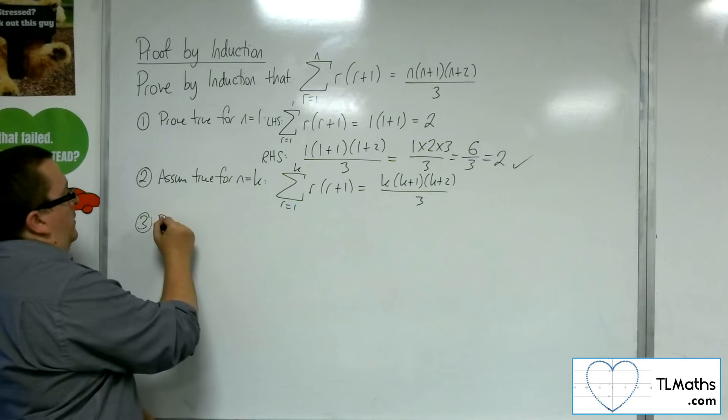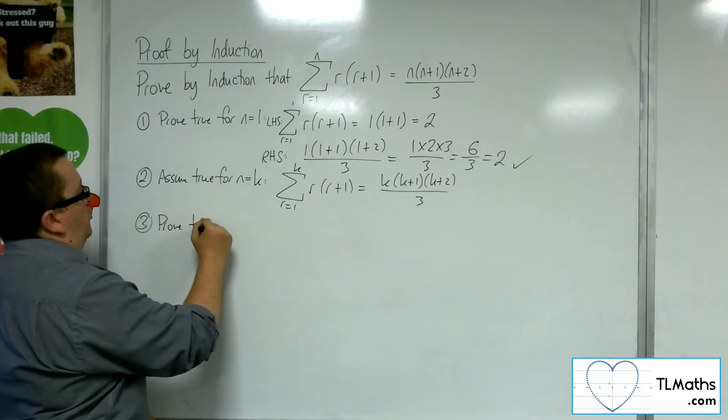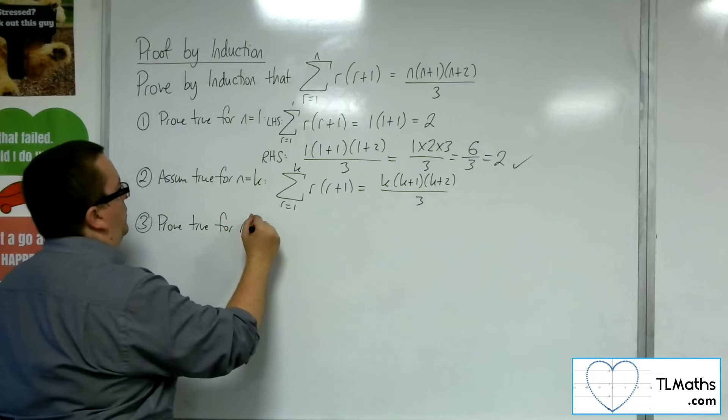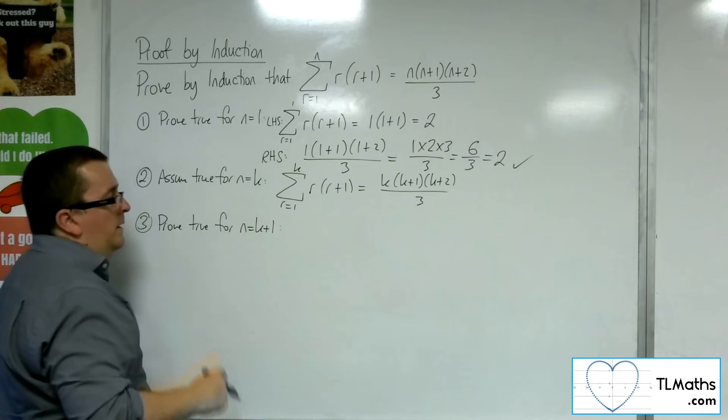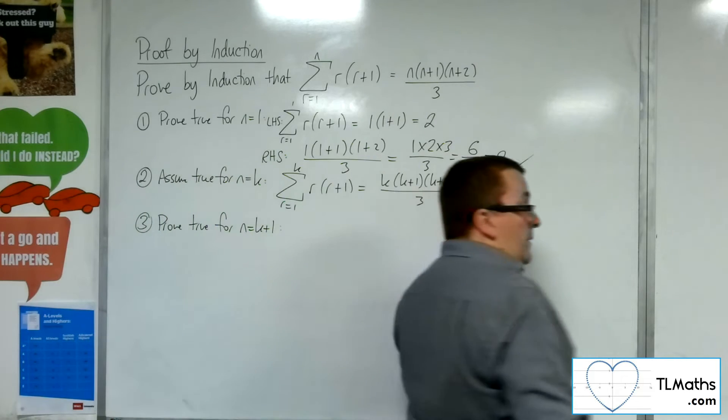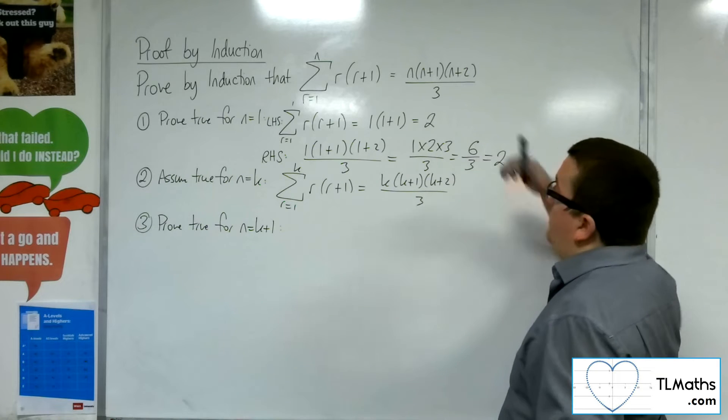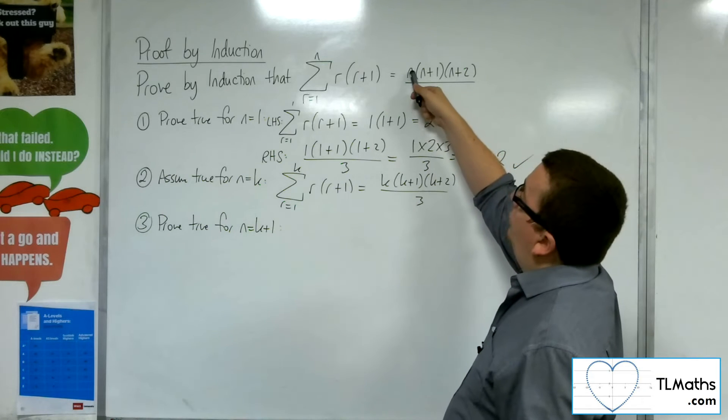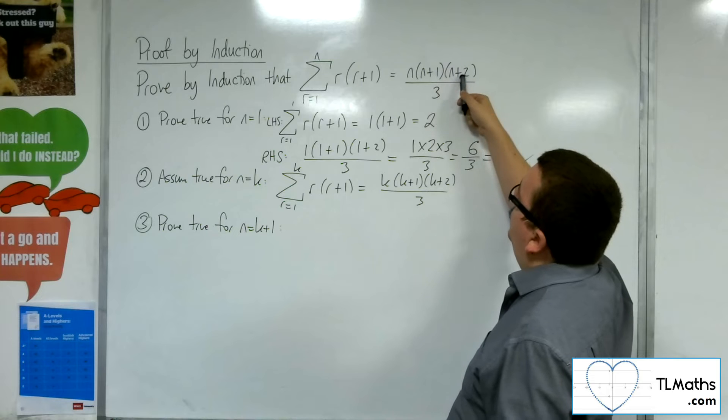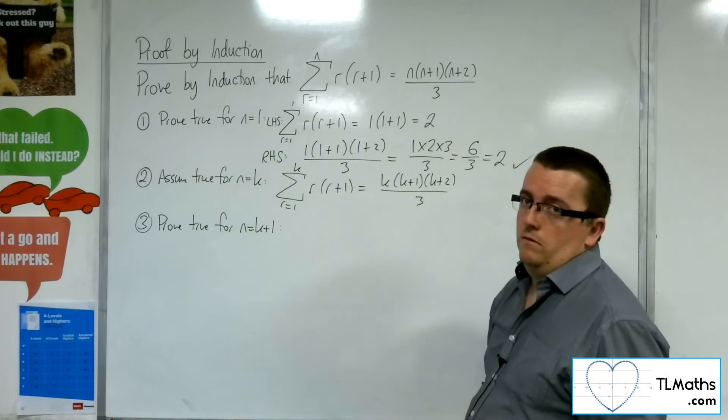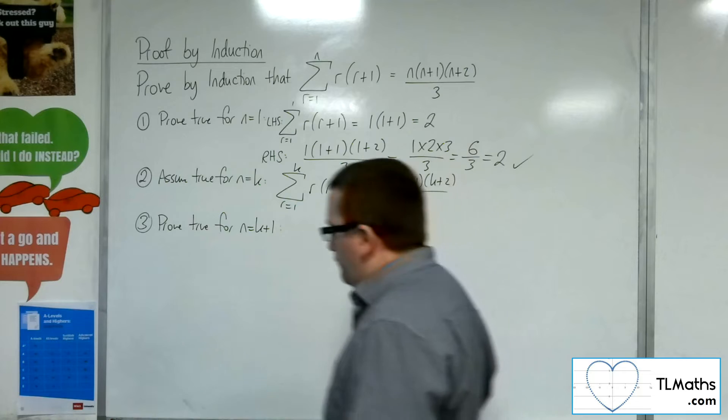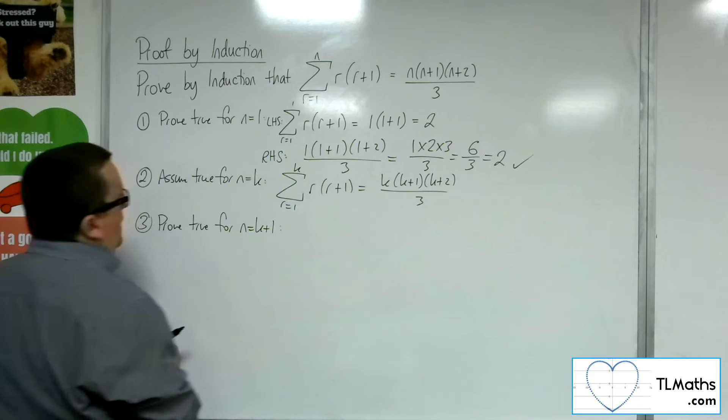Stage 3, prove true for n equals k plus 1. So what do we want to arrive at? Well, we want to arrive at k plus 1 times k plus 2 times k plus 3 all over 3. That's the end result. So let's see how we get there.